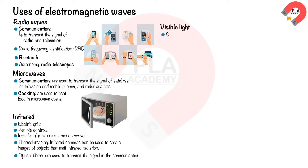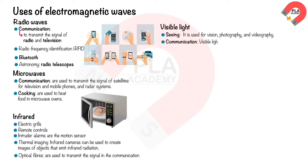Visible light is the part of the electromagnetic spectrum detected by the human eye. It is used for vision, photography, and videography. Visible light can also be used to transmit data in optical fibers.